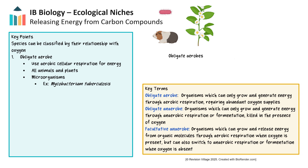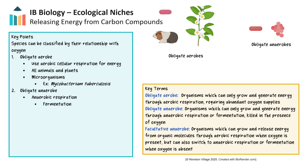The prefix 'a' means without, so obligate anaerobes are organisms that cannot survive in oxygen-rich environments. Instead, they rely on anaerobic respiration processes like fermentation to release energy from carbon compounds. All obligate anaerobes are microorganisms — either bacteria, archaea, or some fungi that can be either single or multicellular. An example includes methanogenic archaea, which thrive in oxygen-poor environments like peat bogs and produce methane.